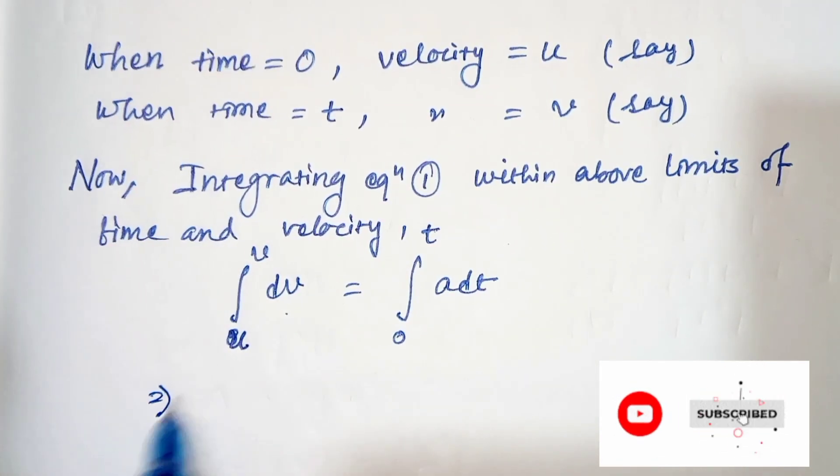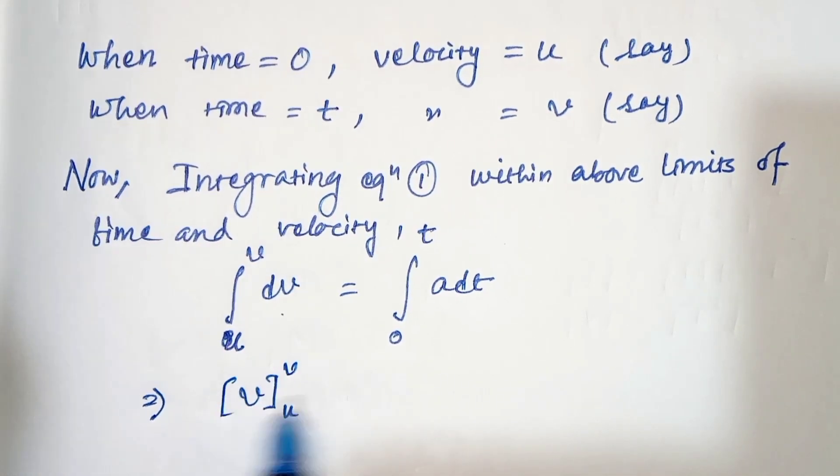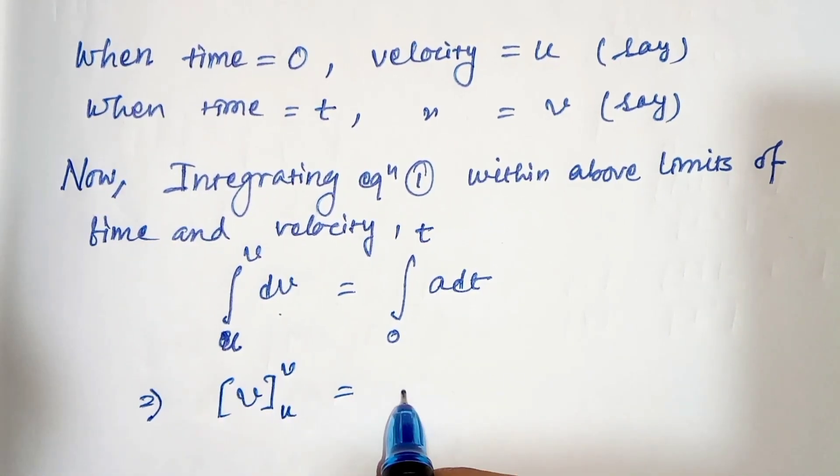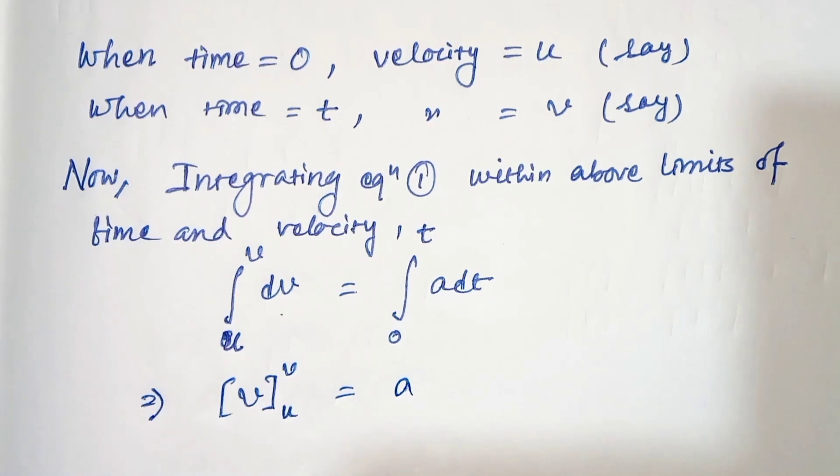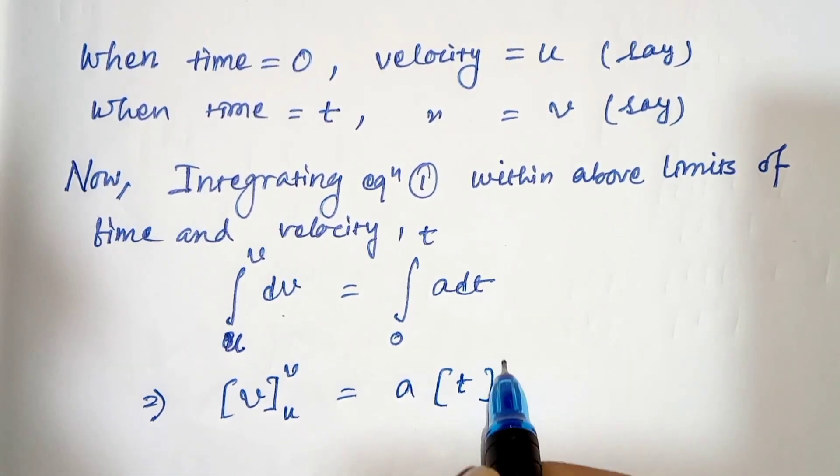Now, the integration of dv is v with limits u to v, and a is constant so it comes outside. The integration of dt is t, from 0 to t.